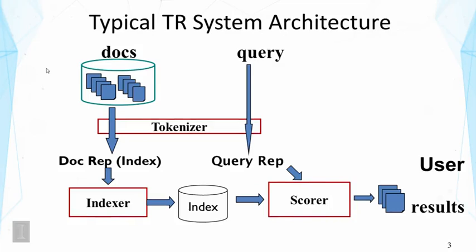This is a typical text retrieval system architecture. Documents are first processed by a tokenizer to get tokenized units, for example words. Then these words or tokens will be processed by an indexer that creates an index, which is a data structure for the search engine to use to quickly answer a query. The query goes through similar processing, so the tokenizer is applied to the query as well so that the text can be processed in the same way. The query representation is then given to the scorer, which uses the index to quickly answer a user's query by scoring the documents and ranking them. The results are given to the user.